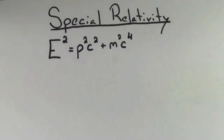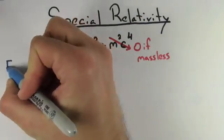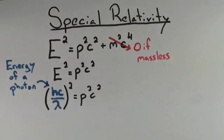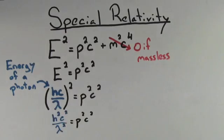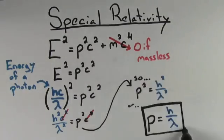For things going that fast, you have to use special relativity. I don't want to waste a lot of time talking about special relativity in this video. So you're just going to have to take my word for it that the rules of special relativity allow for a loophole. This loophole provides a way for massless objects to have momentum.